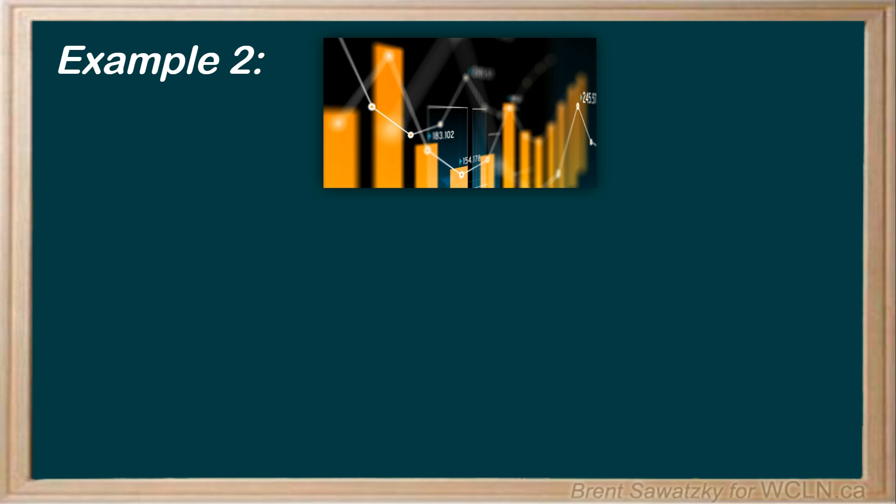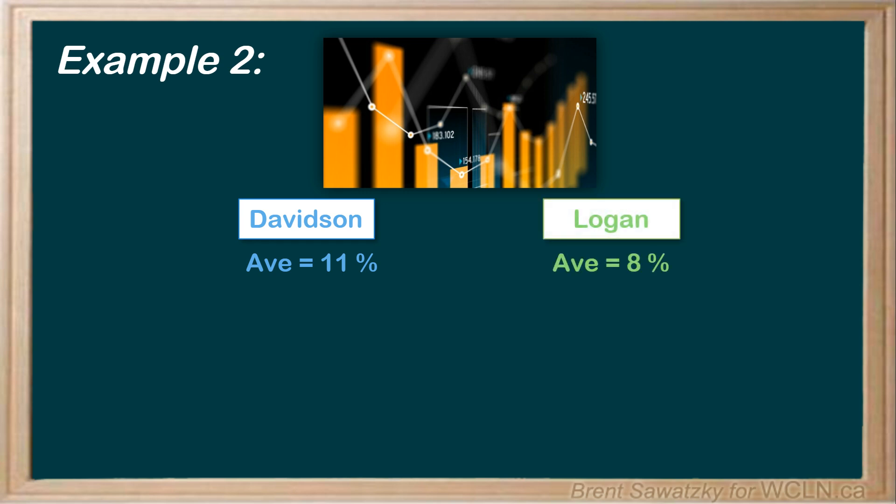In this case, we won't show all of the data, but we'll jump right to some analysis results. So the average return for the Davidson investment strategy was 11%, the mean, while the average return for the Logan strategy was 8%. And at this point, it looks like the Davidson investment strategy is the obvious winner, right? End of story? Maybe.